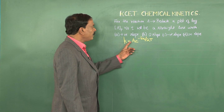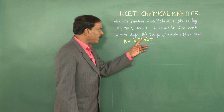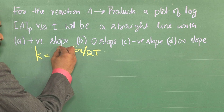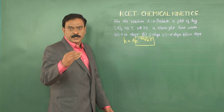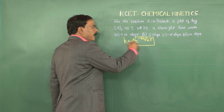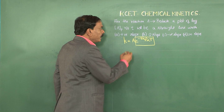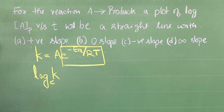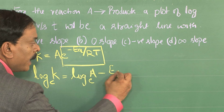The Arrhenius equation K = A·e^(−Ea/RT), where K is the rate constant, Ea is activation energy, R is the universal gas constant, and T is temperature in Kelvin. The factor e^(−Ea/RT) is called the Boltzmann factor. Whenever the relationship is exponential, it is more convenient to use the logarithmic form. The natural log form is: ln K = ln A − Ea/RT.